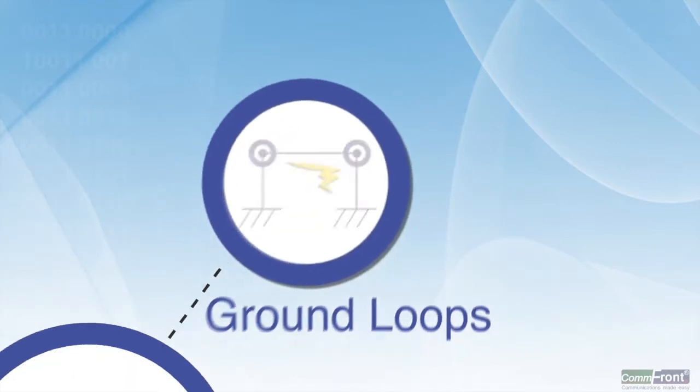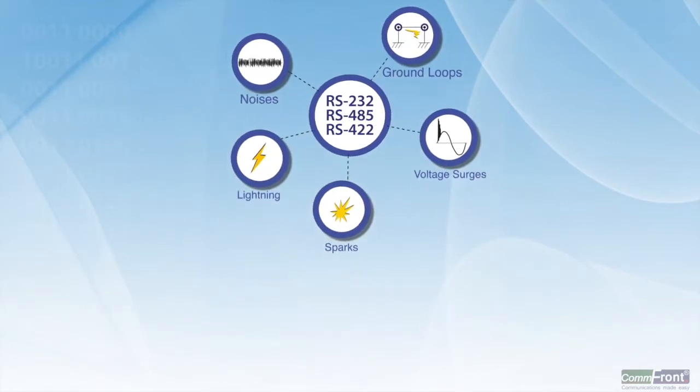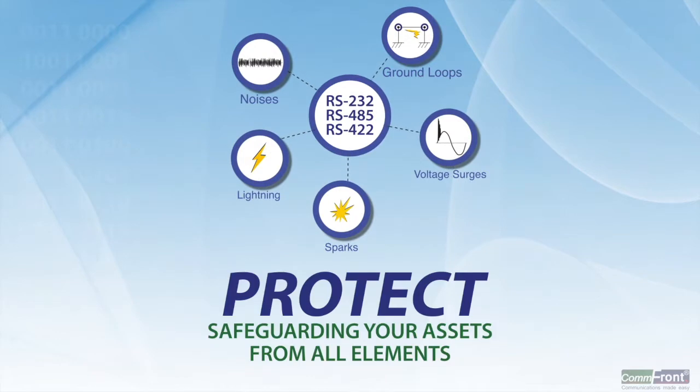There are a few methods of voltage and current surge protection in the industry, and the most effective are optical isolators and surge protectors.